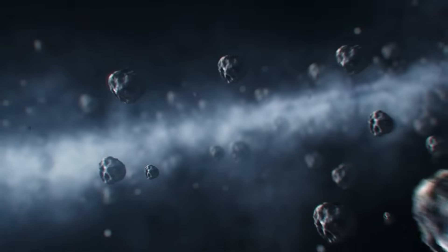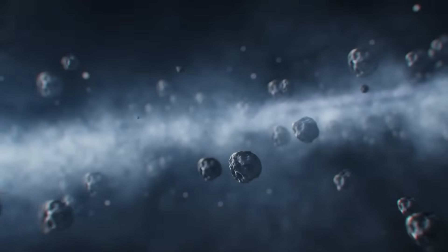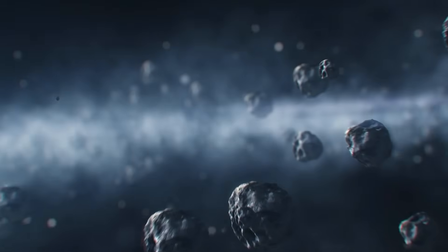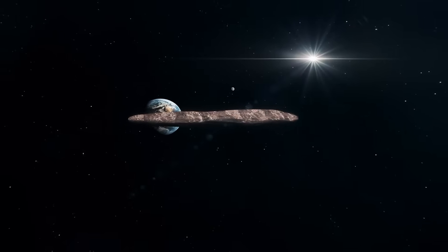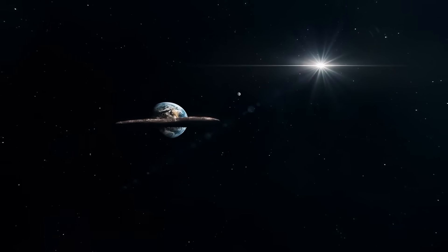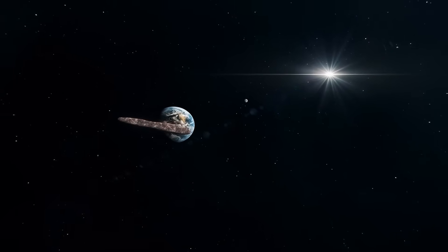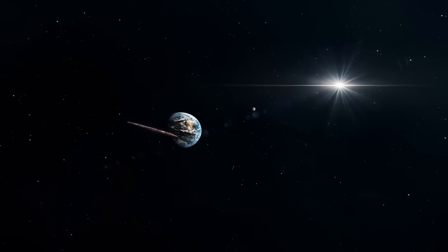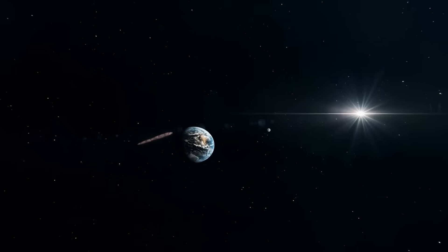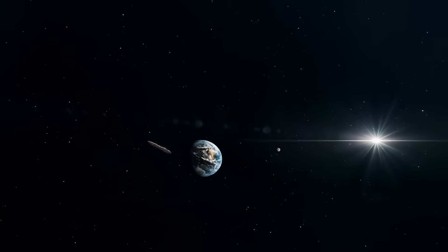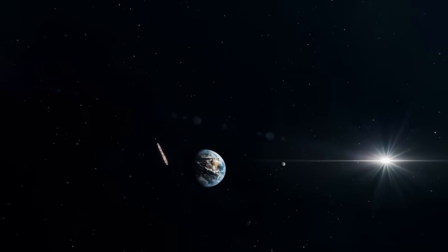In October 2017, astronomers looking through telescopes in Hawaii noticed something strange. A long, dark object was racing through our solar system faster than anything we'd ever seen. It wasn't orbiting the sun. It wasn't following the rules. It was just passing through. And by the time we realized it was there, it was already leaving.